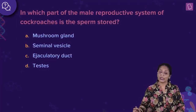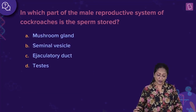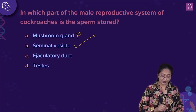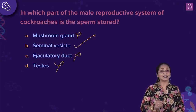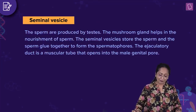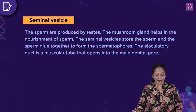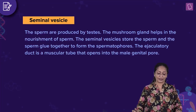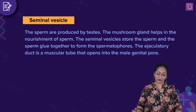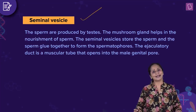In which part of the male reproductive system of cockroaches is the sperm stored? Is it the mushroom gland? No — this provides nourishment. Seminal vesicle? Yes, this is the right answer. Ejaculatory duct is incorrect, and testis is where the sperms are formed. The seminal vesicles store the sperm and sperm glue together to form the spermatophore. The ejaculatory duct is a muscular tube that opens into the male genital pore. The right answer is seminal vesicle.